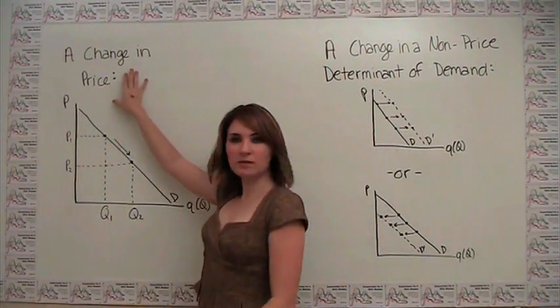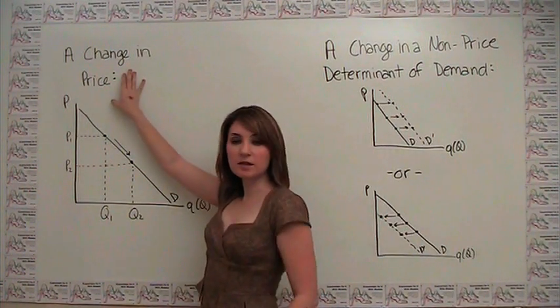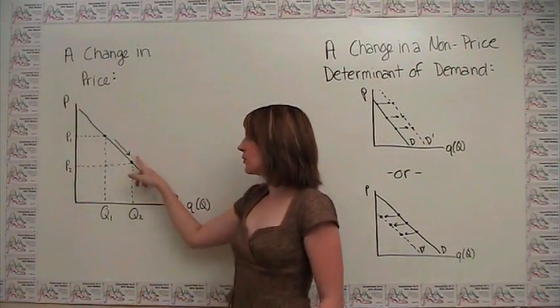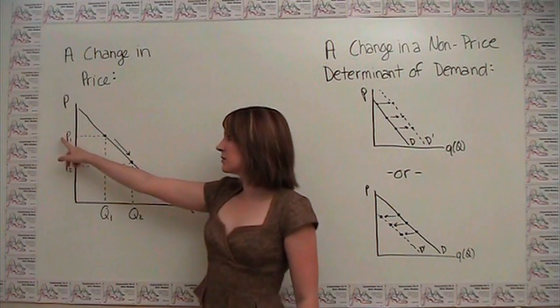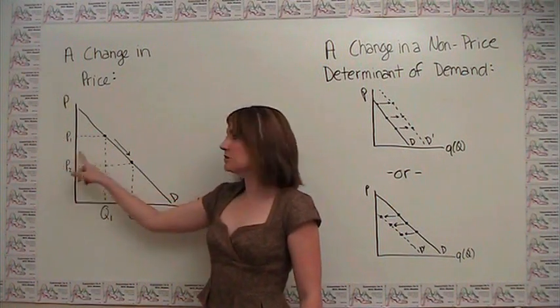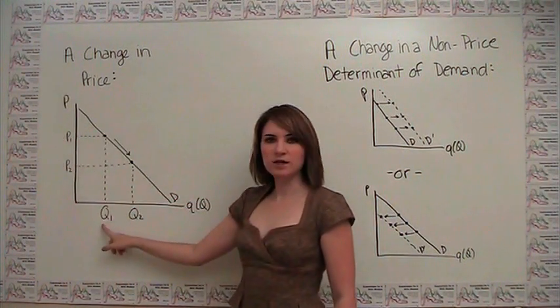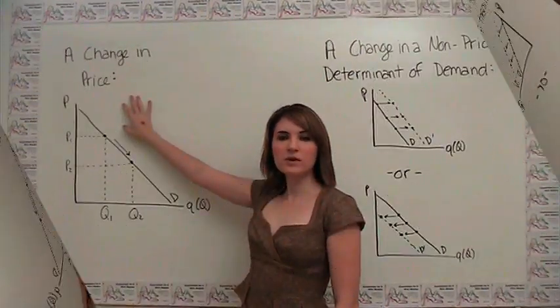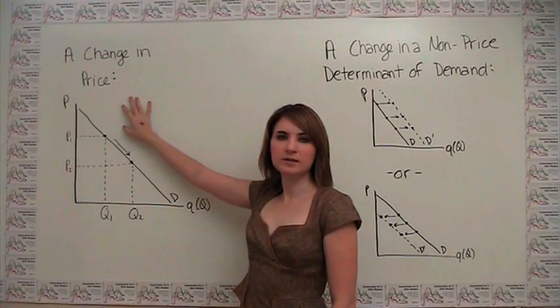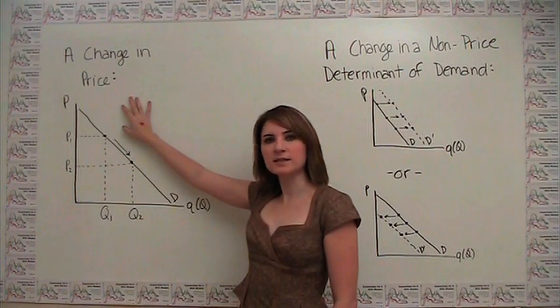You'll notice here that when we have a change in price and nothing else, we're just moving from one point to another point on the same demand curve. You'll notice as we go from P1 to P2, we just get a corresponding change in quantity from Q1 to Q2. We call this movement along the demand curve a change in quantity demanded.